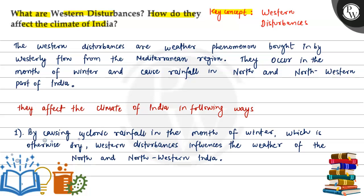The key concept of the question is western disturbances. Western disturbances are weather phenomena brought in by the westerly flow from the Mediterranean region. They occur in the months of winter and cause rainfall in the north and north-western part of India. The westerly winds originate from the Mediterranean Sea.